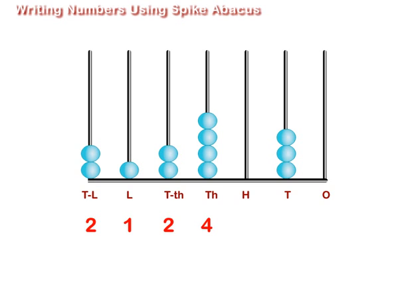No beads in the spike representing hundreds, 3 beads in the spike representing tens, no beads in the spike representing ones.